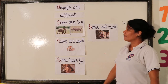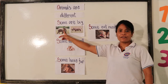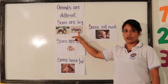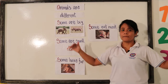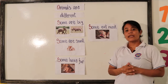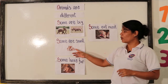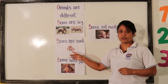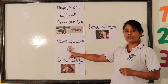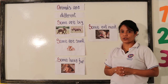Big animals, for example, the elephant or the rhino. They are big animals, but we also have small animals. For example, the rabbit and the hamster.